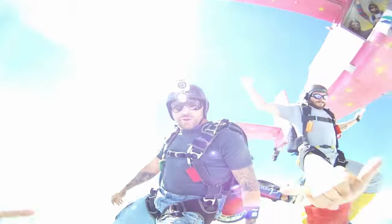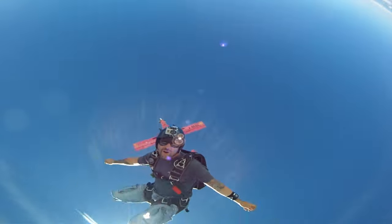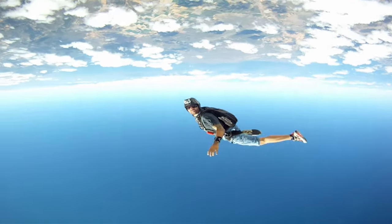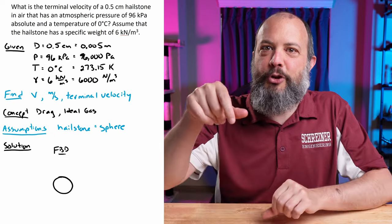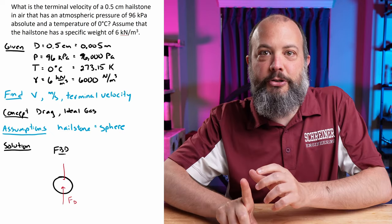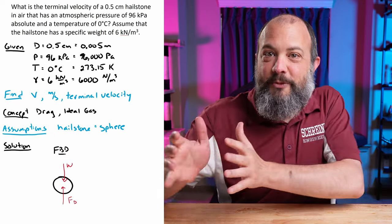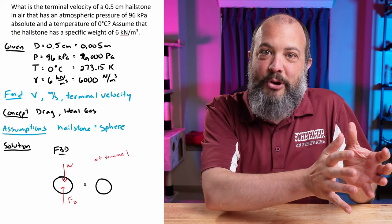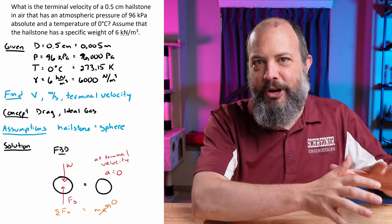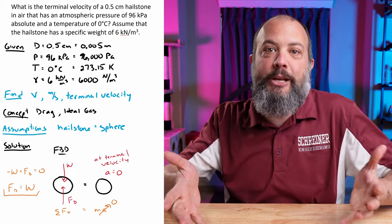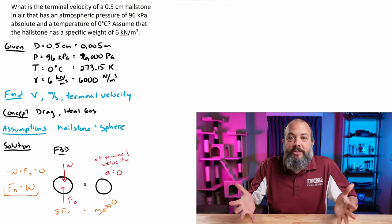Terminal velocity is the maximum velocity for a falling object where the forces are balanced and it stops accelerating. Essentially, if you look at your free body diagram, you have your weight vector pointing down, your drag force pointing up. Sum of forces equals mass times acceleration. At terminal velocity, acceleration equals zero. So that means your drag force will equal the weight.